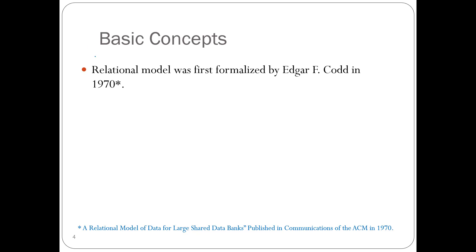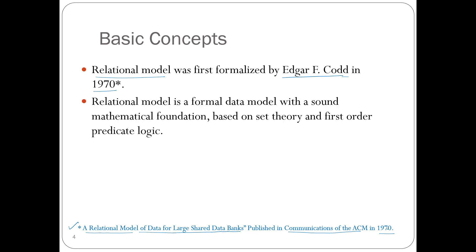The relational model was introduced by a very famous computer scientist from England named Edgar F. Codd in 1970. It was first formalized in his paper 'A Relational Model of Data for Large Shared Data Banks,' published in Communications of the ACM in 1970. He was awarded the Turing Award as well, so his contribution is of extreme importance.